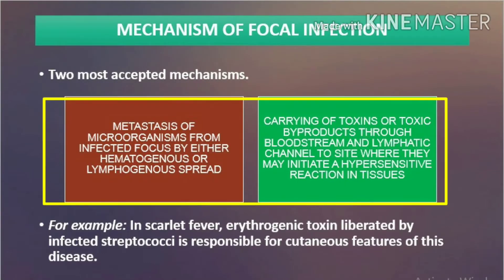Mechanisms of focal infection — two most accepted mechanisms. First, metastasis of microorganisms from an infected focus by either hematogenous or lymphogenous spread. Second, carrying of toxins or toxic byproducts through the bloodstream and lymphatic channels to sites where they may initiate a hypersensitive reaction in tissues — for example, in scarlet fever, erythrogenic toxin liberated by infected streptococci is responsible for the cutaneous features of the disease.